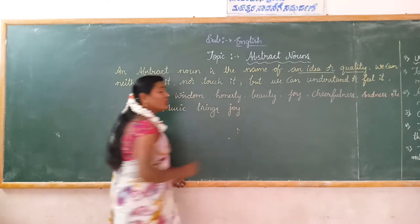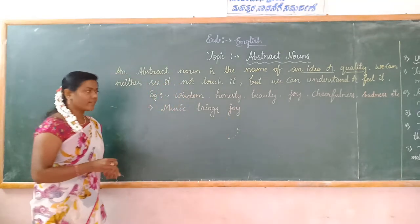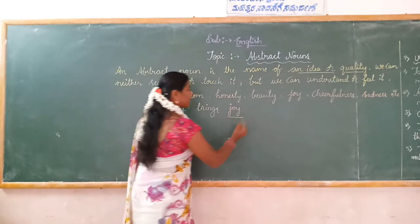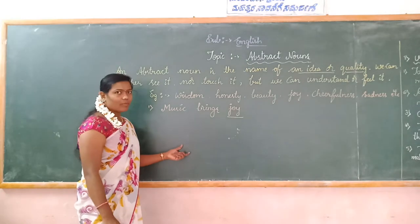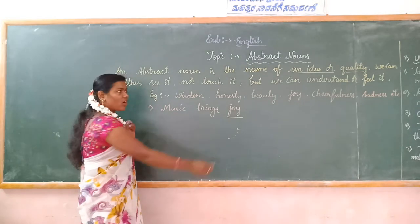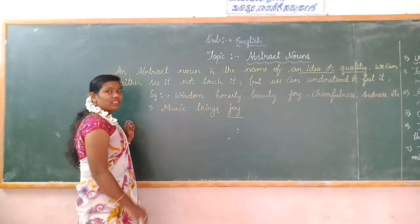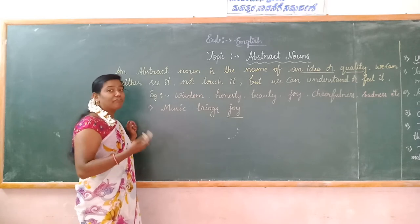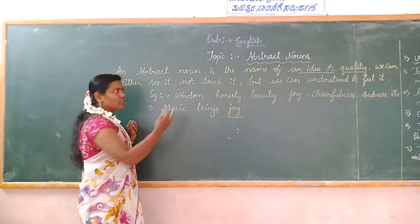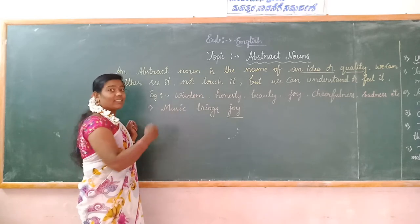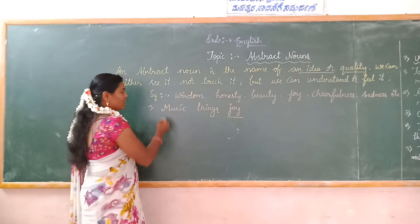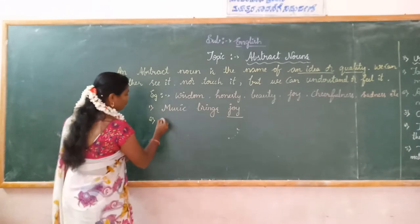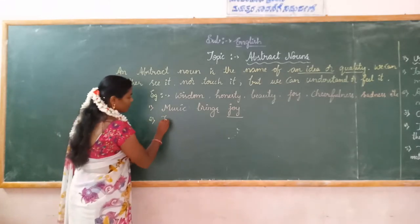Which is the abstract noun in this sentence? Joy. Joy is the abstract noun because we can't touch it, we can't see it — we can only understand it and feel it. So joy is the abstract noun.